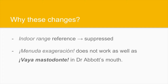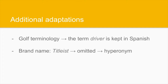The indoor range reference is omitted in Spanish, as we believe it would make it easier to understand for the target culture, where it would prove difficult to find the perfect equivalent of the word 'range.' Also, we substitute 'menuda exageración' with the alternative 'vaya mastodonte,' given the mouth movements close to the end of this part. You will have the chance to see the whole video in Spanish at the end of this section. Another relevant consideration is the use of 'driver' in Spanish, which appears to be frequent in golf terminology. Two doctors are speaking in this scene, so it is implied they would potentially be fans of the sport and familiar with its specialized jargon. The brand name Titleist is abandoned in favor of a hypernym, which is 'driver,' a kind of golf club.